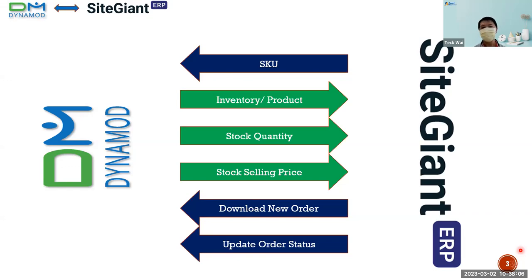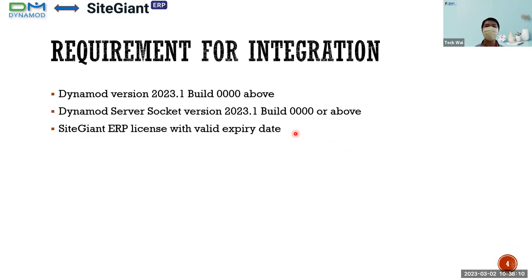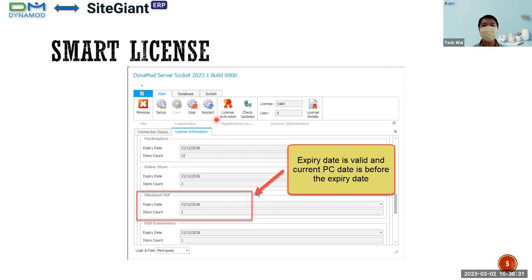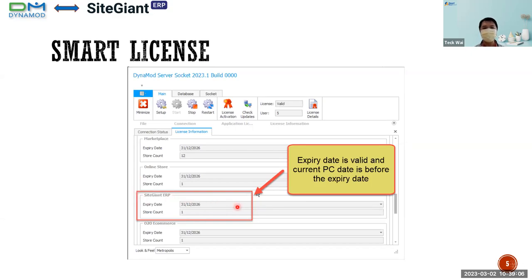Moving on to the requirements for the integration. First, you need to have the latest version of Dynamo as well as the Dynamo server socket, and then you have to enable the SiteGiant ERP license. This is a new feature in the new Dynamo version. If you go to the Dynamo server socket and come to the license detail, you scroll down and you will be able to see the SiteGiant ERP option. This is a new feature to check the license for the ERP. You have to enable this SiteGiant ERP option.